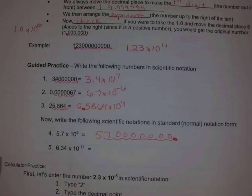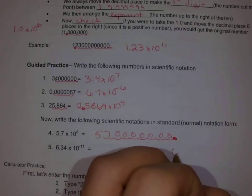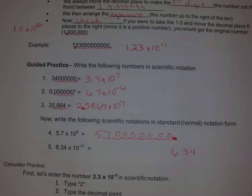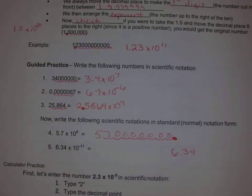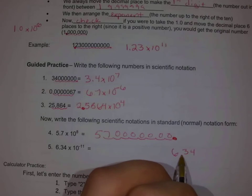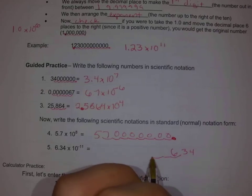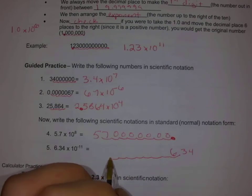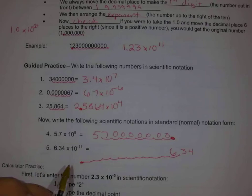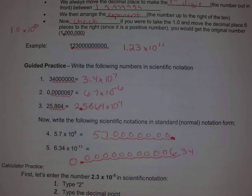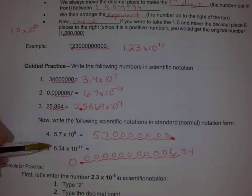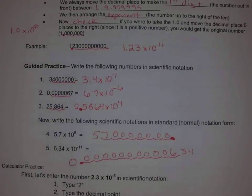Now let's convert 6.34 times 10 to the negative 11th. I put my 6.34 all the way over to the right, because with a negative exponent I'll have a bunch of zeros coming before my digits — this will be a number way less than 1. Then I move my decimal: 1, 2, 3, 4, 5, 6, 7, 8, 9, 10, 11. It gives 0.00000000634. We can really see here that scientific notation is way more convenient to write than the full standard form.